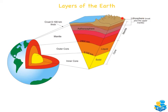Above the asthenosphere we have the lithosphere, which makes up the very top part of the mantle and the crust. The top layer itself is known as the crust — it's the earth's outer skin, made up of solid rock, it's what we live on, and it's divided into oceanic crust and continental crust.